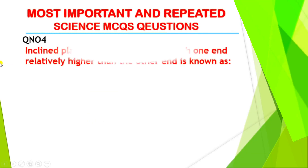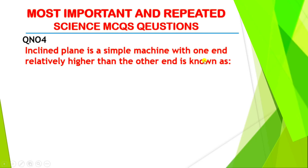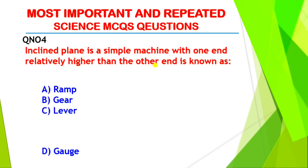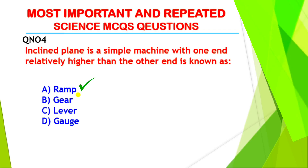Question number four: an inclined plane is a simple machine with one end relatively higher than the other. What is it called? The right answer is option A, ramp. An inclined plane is a surface which is higher from one end and lower from the other, and it makes it easy to move heavy things up or down.